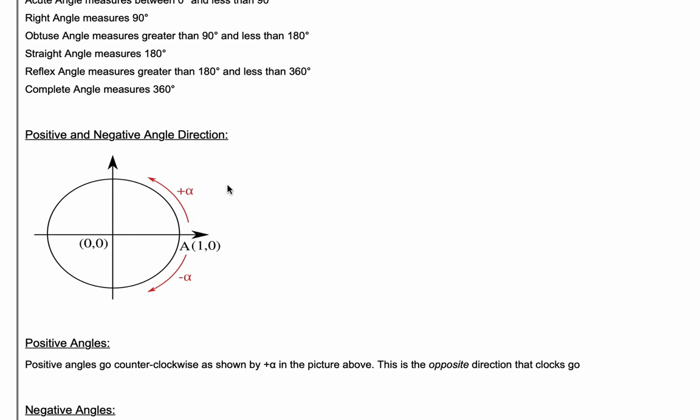Obtuse angles are greater than 90, but less than 180. So you would have something like 135 here, but not all the way up to the straight line. Next, a straight angle or straight line measures 180 degrees. A reflex angle measures greater than 180, but less than 360. And finally, the complete angle measures 360 degrees. So that is a full circle.